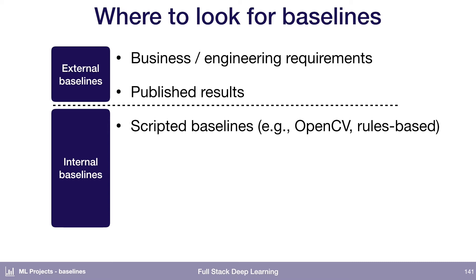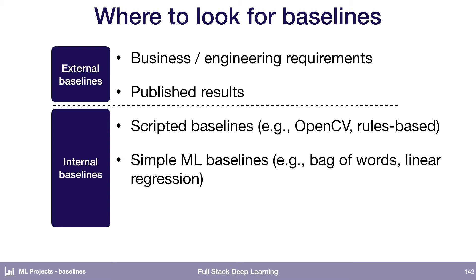You can use OpenCV or create some rules-based baselines. And then you can use simpler machine learning models — a bag of words model or a linear regression. The hope would be that if you're doing deep learning, your model should perform at least as well as that. And then finally, you can use human performance.